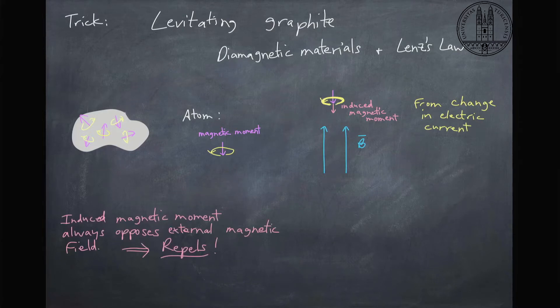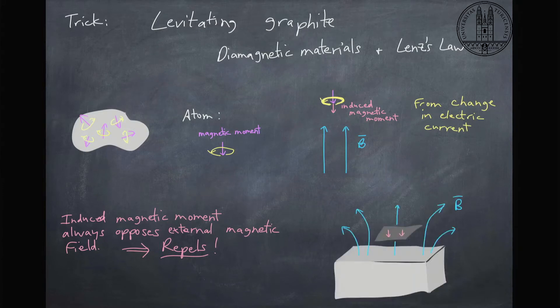So this induced magnetic moment will always oppose the external magnetic field, and it basically produces a magnet that is repelled from the magnetic field. So now if I have, for instance, a magnet here with a magnetic field pointing up,